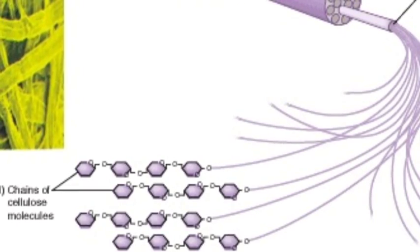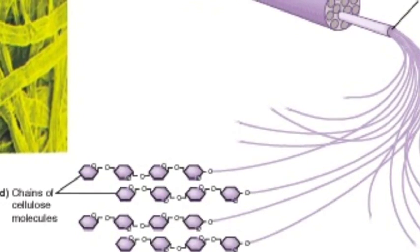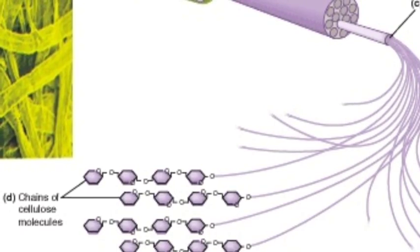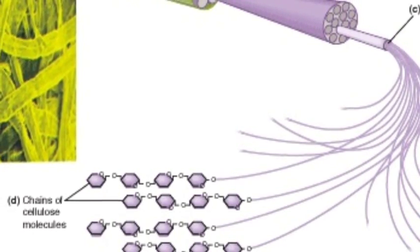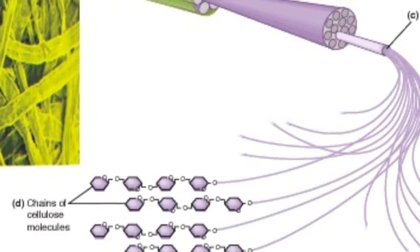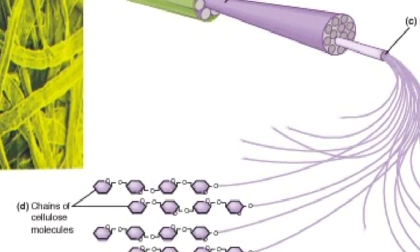Joining beta-glucose together makes long chains called cellulose. Cellulose chains are long and straight rather than the coiled amylose due to structural differences. Cellulose chains are stronger than the chains found in amylose.